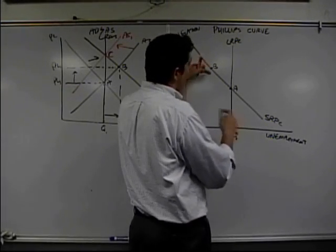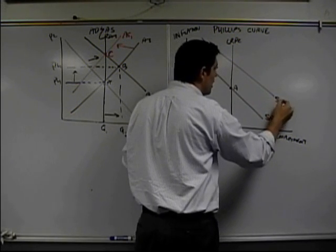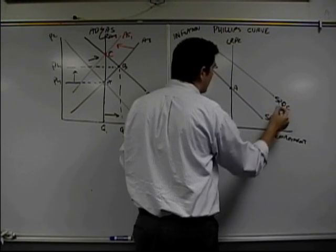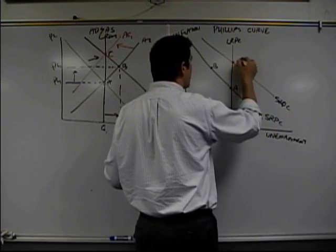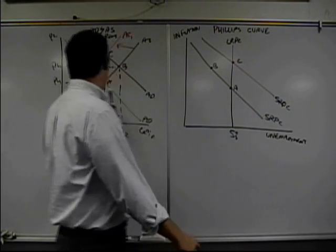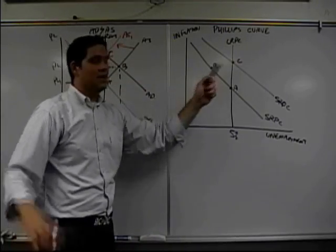The only way to get higher prices and lower unemployment is for this whole curve to shift, short-run Phillips curve, looks like that, and the curve shifts over to a new point, point C. A, B, C, A, B, C.